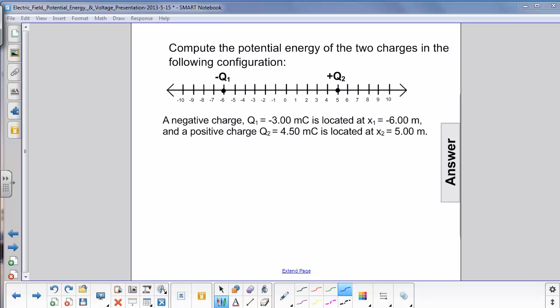Compute the potential energy of the two charges in the following configuration. We have a negative charge q1 at x equals minus 6 meters, negative 3.00 millicoulombs, and this negative sign is important. Then we have q2, 4.50 millicoulombs, at x2 equals 5 meters.